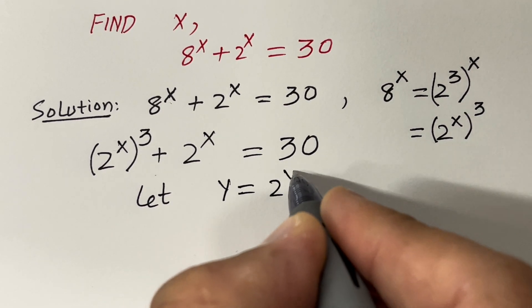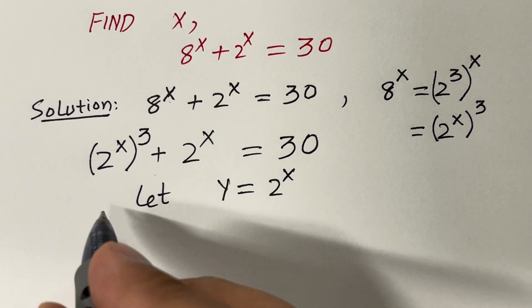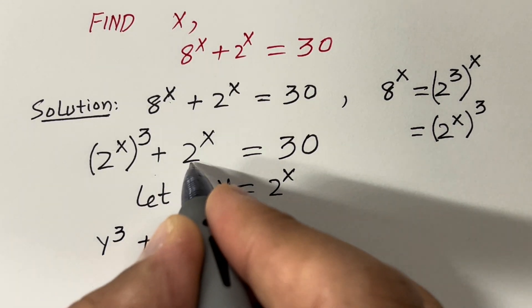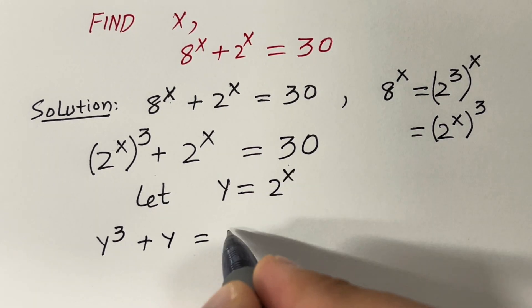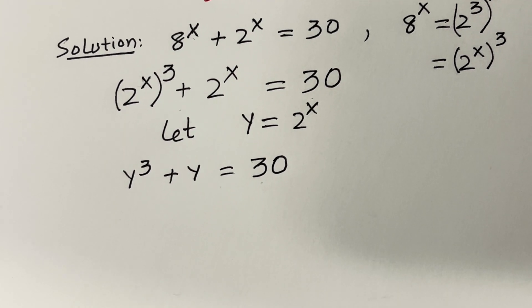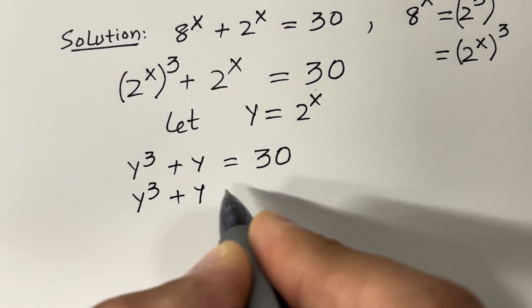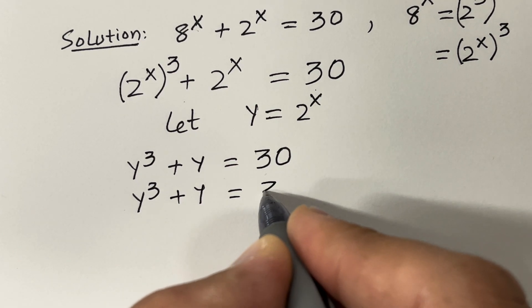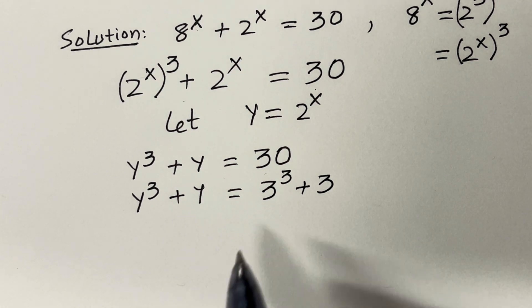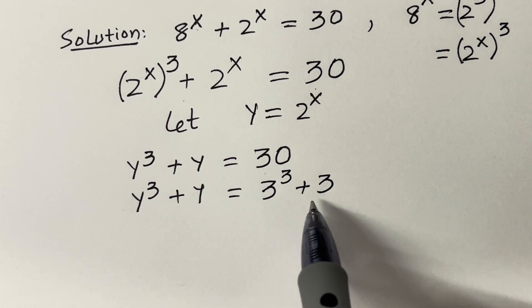Now I would like to use the substitution y equals 2 raised to the power x. Then 2 raised to the power x is y, and we have y cubed plus y equals 30. This 30 can be written as 3 cubed plus 3, since 27 plus 3 is 30.